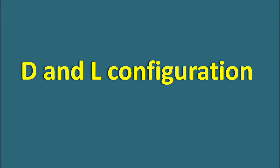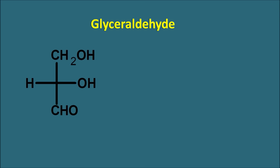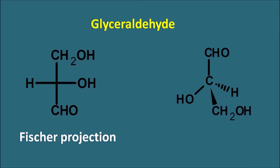Hi everyone. Today we will discuss the D and L configuration. Glyceraldehyde is the first aldose in carbohydrates and can be represented by one of these projections. This projection is called the Fischer projection. Glyceraldehyde can also be represented by another projection — the solid wedge and dashed line projection.